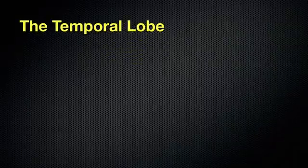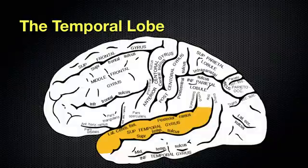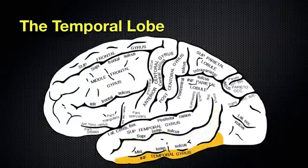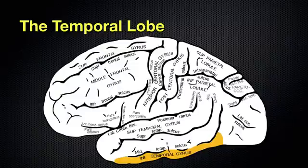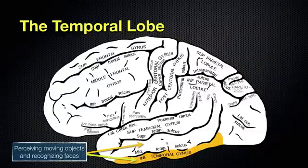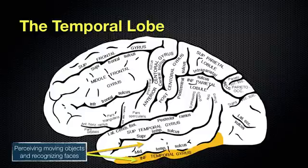Let's go further into the temporal lobe and look at its three regions: the superior temporal gyrus, the middle temporal gyrus, and the inferior temporal gyrus. These are separated by two sulci. When you look at something moving, processing needs to happen for you to understand that the object is moving. There are regions in the middle and inferior gyri involved in perceiving moving objects and also in recognizing faces — so you can see someone and recognize who they are, and understand that objects are moving.